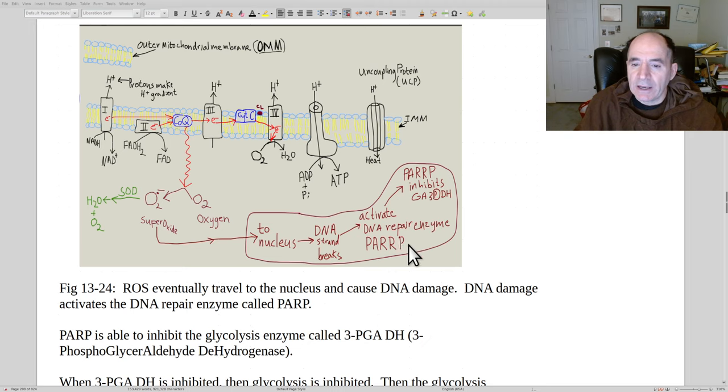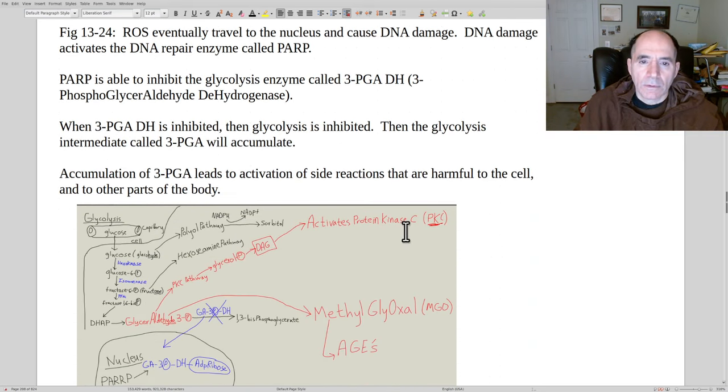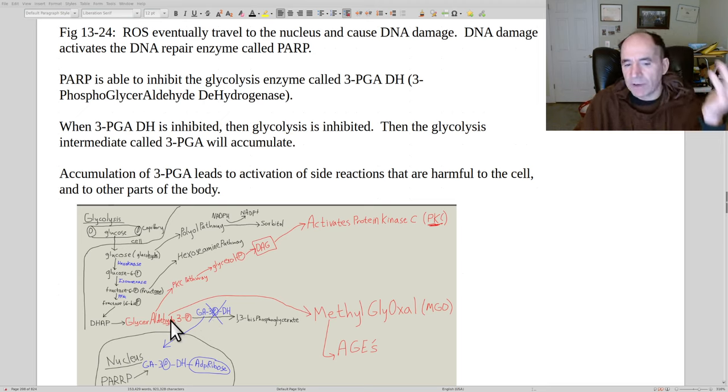When it damages DNA, it activates something called a PARP enzyme. We're going to come back to this PARP enzyme a little later. By the way, this PARP enzyme will inhibit the glycolysis enzyme 3-PGA-DH, that's 3-phosphoglyceraldehyde dehydrogenase. When it inhibits that, that means 3-phosphoglyceraldehyde or 3-PGA will accumulate. That sets off a whole bunch of reactions that are really bad for the cell. It activates something called protein kinase C. That's bad and associated with insulin resistance.